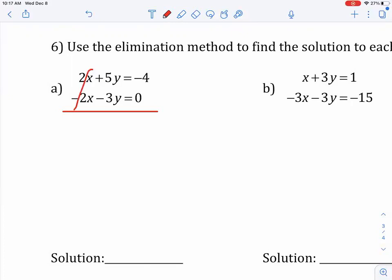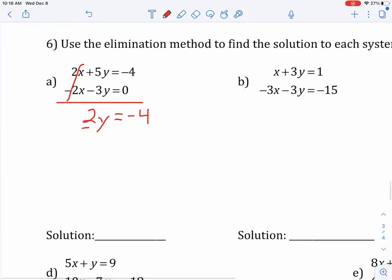So, we have eliminated the X. And 5Y minus 3Y is 2Y. And negative 4 plus 0 is negative 4. So I just added the two equations down, which eliminated the Xs. And now I can divide both sides by 2, and I already have half my answer.